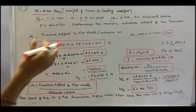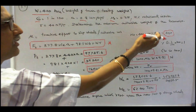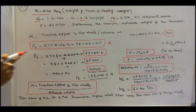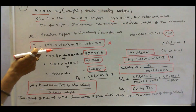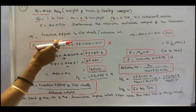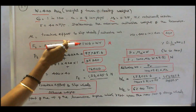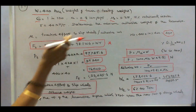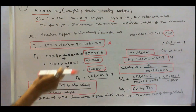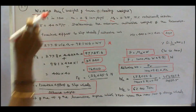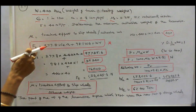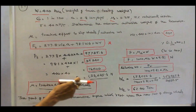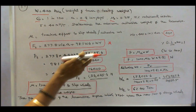Therefore, accelerating weight equals 400 plus 10% of 400, which equals 440. We know that tractive force equals 277.8 into accelerating weight into acceleration, plus 98.1 into dead weight into percentage gradient, plus dead weight into train resistance. Substituting all known values, we get Ft equal to 153,025.6 N.